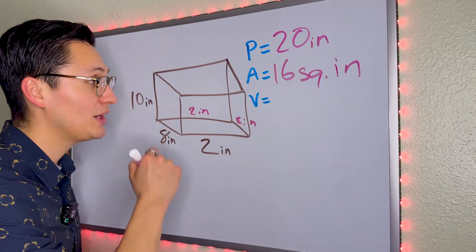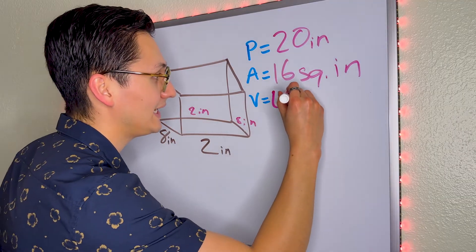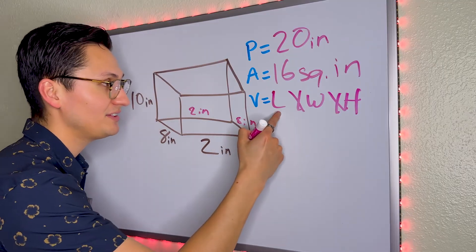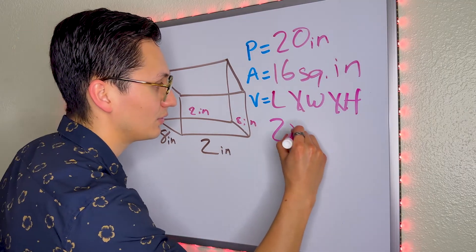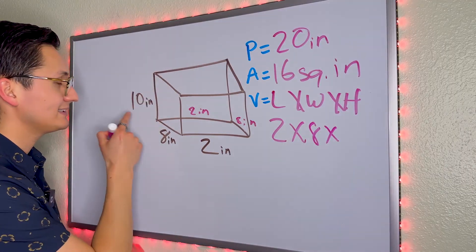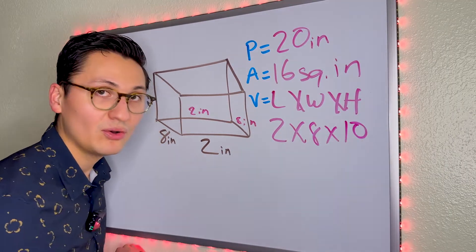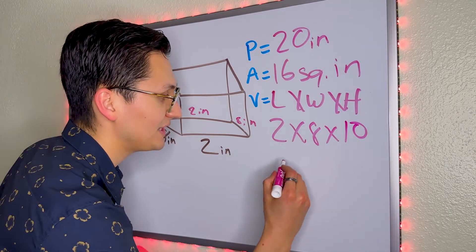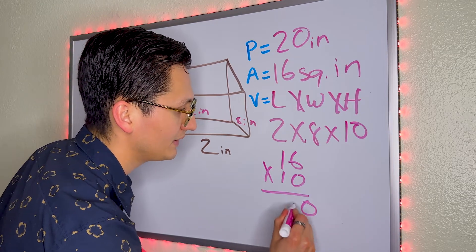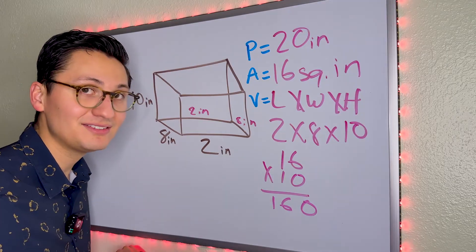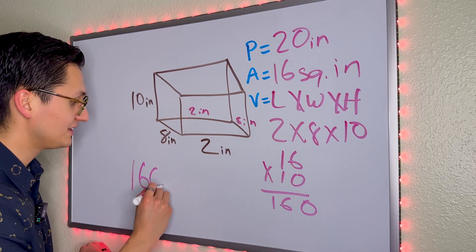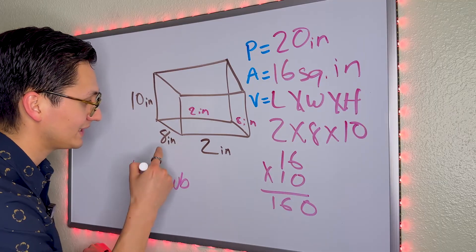Last but not least, volume — length times width times height. The length is 2, the width is 8, and the height is 10. 2 times 8 is 16, times 10 gives us 160 — not squared, but 160 cubic inches.